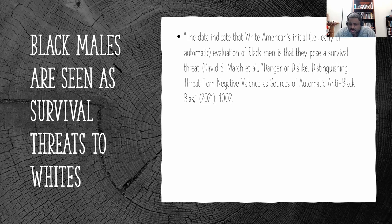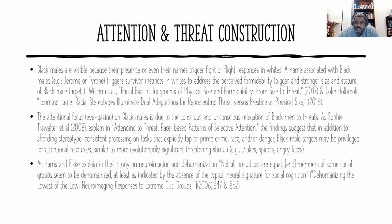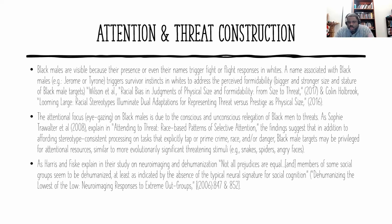Recent studies on threat perception and attentional allocation show that seeing a Black man or hearing a Black man's name actually triggers fight-or-flight responses in whites. Even seeing the body of a Black man makes the onlooker think that person is more dangerous, bigger, and more aggressive than whites or Asians. Research by Charl, Walter, and others found that white people allocate specific attentional resources toward Black men because they are thought to be threatening — linking this to responses similar to spiders, snakes, and angry faces.